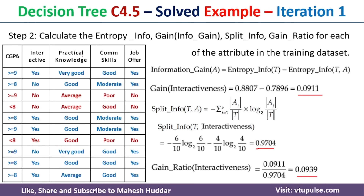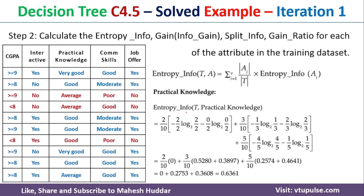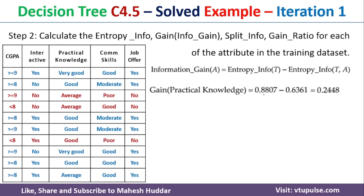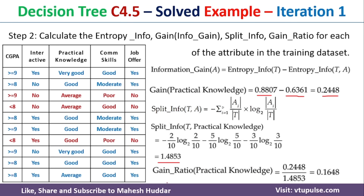For practical knowledge, the entropy info is 0.3661, information gain is 0.5148, split info is 1.4853, and gain ratio is 0.1648. Practical knowledge has three possible values: very good, good, and average.